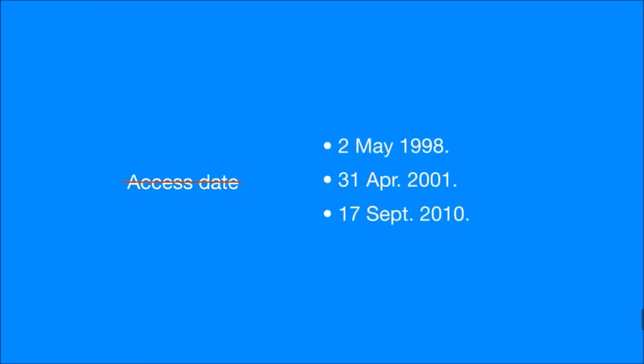When including URLs in a citation, leave out the hypertext protocol prefix. While this used to be the case, you no longer need to include the date you accessed the website. If you still want to add this information, list it after the URL in the day-month-year format, using the proper month abbreviation.